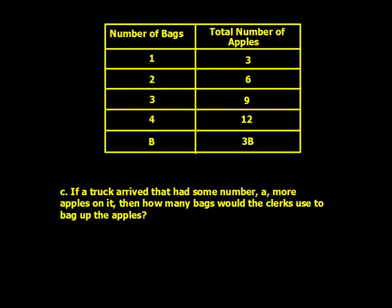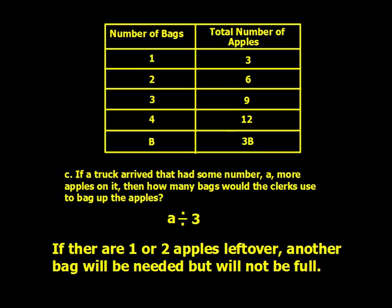Letter C: if a truck arrived that had some number A more apples on it, how many bags would the clerks use to bag up the apples? It's a little different — you're going from the apples column to the bags column. The expression you'd use this time is A divided by 3. If there are one or two apples left over, another bag will be needed but will not be full.